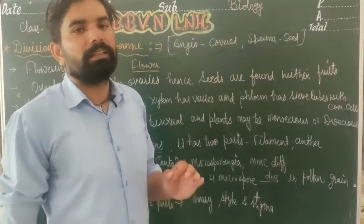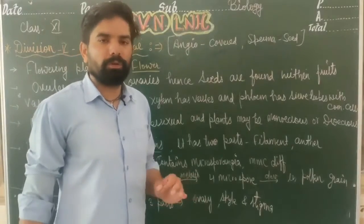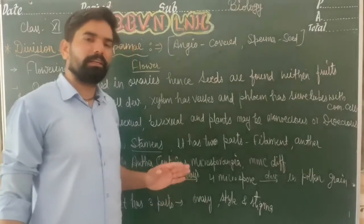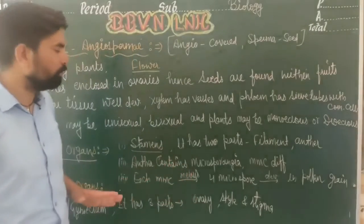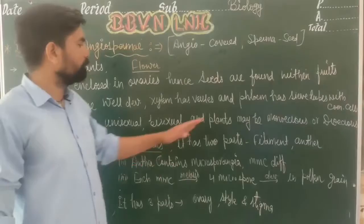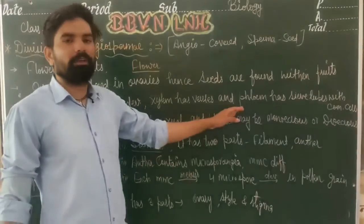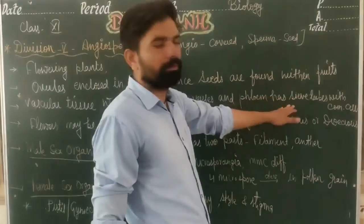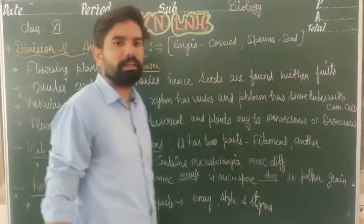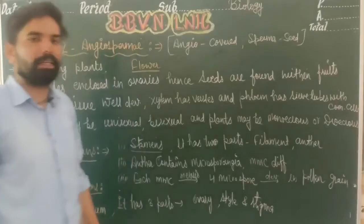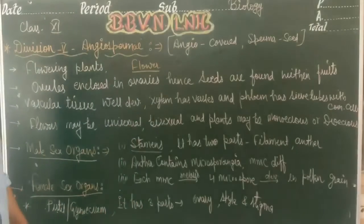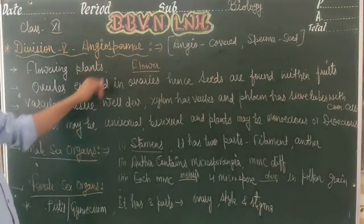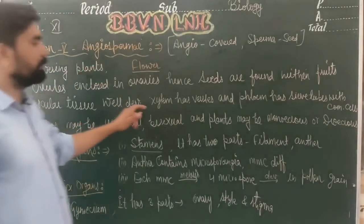Vascular tissue is well developed — it includes xylem and phloem. Xylem contains vessels and tracheids, while phloem contains sieve tubes with companion cells.